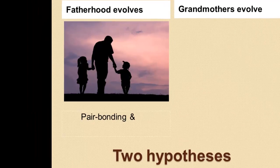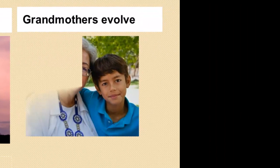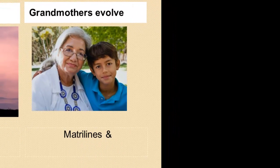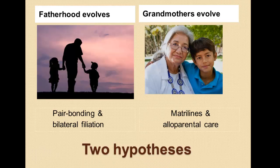The fatherhood argument stresses pair bonding — the evolution of stable pair bonding — and along with that the development of bilateral affiliation, or rights through both mother and father. The grandmother hypothesis argues that this will instead be associated with the development of matrilines and alloparental care. The key question in reading Mothers and Others is: who are the key 'others' assisting mothers — is it fathers, or grandmothers and other closely related relatives?